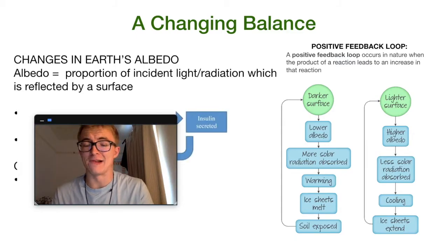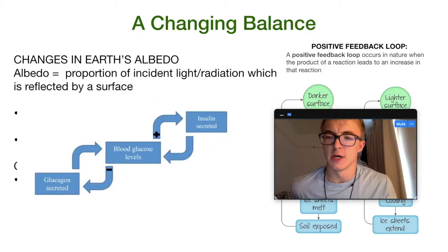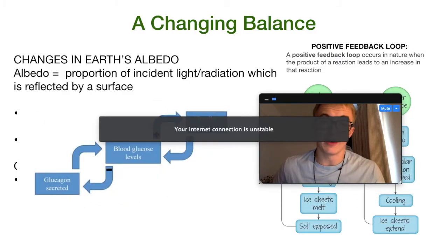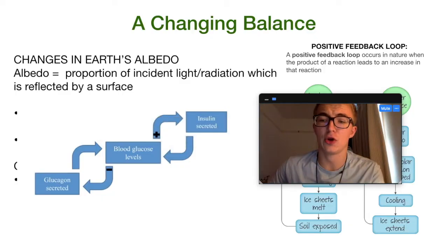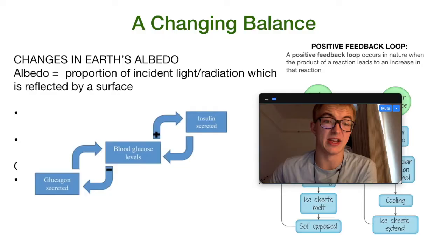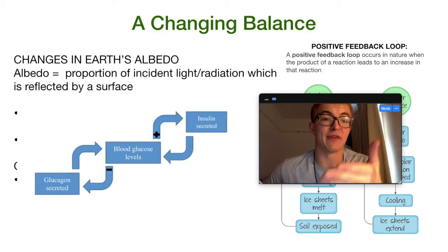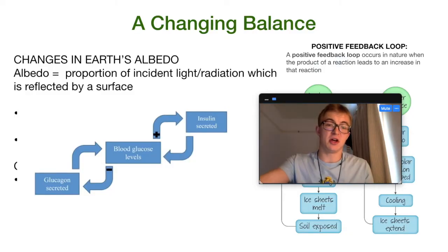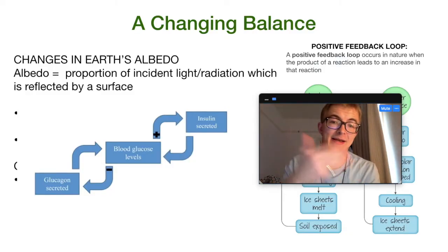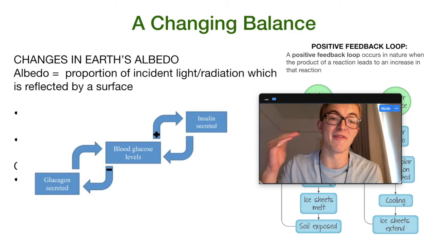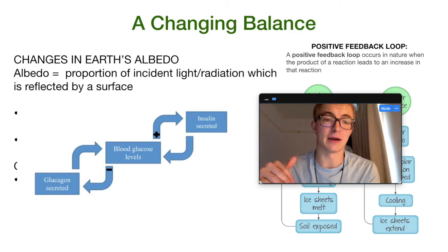You can see an example of a negative feedback loop here. If you're doing biology, this could be super useful. We have glucagon secreted, leading to an increase in blood glucose levels. Because of that, insulin is secreted. Insulin helps to lower blood glucose levels, therefore we have a reduction in the glucagon secreted. The output of that initial reaction — insulin — is something that actually slows down the reaction. That's why it's a negative feedback loop.